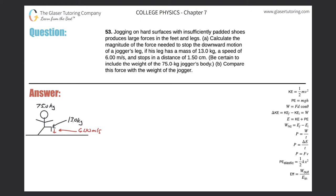Number 53. Jogging on hard surfaces with insufficiently padded shoes produces large forces in the feet and legs. Letter A: Calculate the magnitude of the force needed to stop the downward motion of a jogger's leg if his leg has a mass of 13 kilograms, a speed of 6 meters per second, and stops in a distance of 1.5 centimeters. Be certain to include the weight of the 75 kilogram jogger's body.